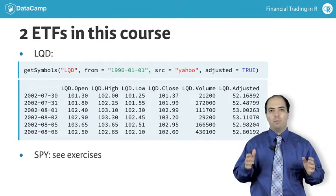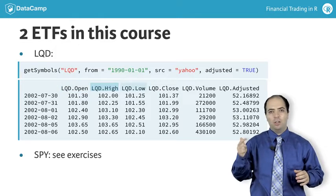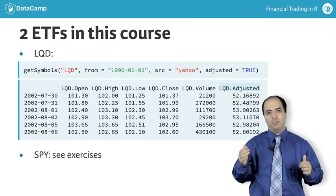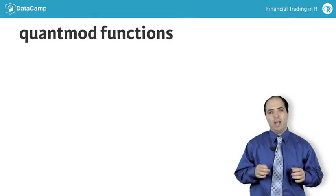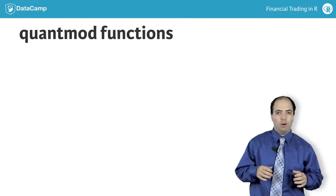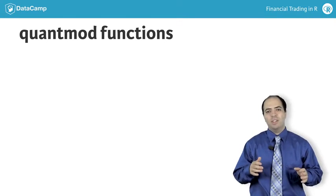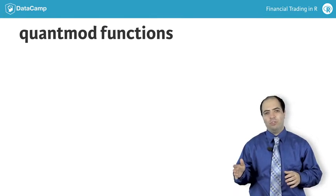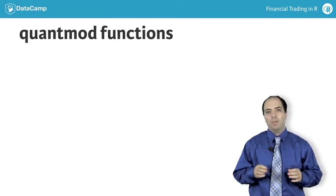The data comes in a format with the following columns: open, high, low, close, volume, and adjusted prices. The QuantMod library has the following commands to access each of these columns: OP for open, HI for high, LO for low, CL for close, VO for volume, and AD for adjusted.